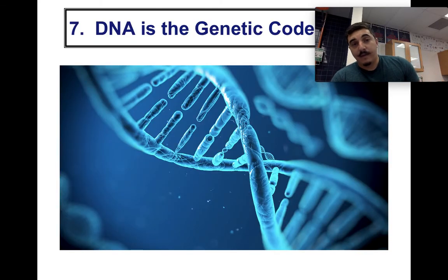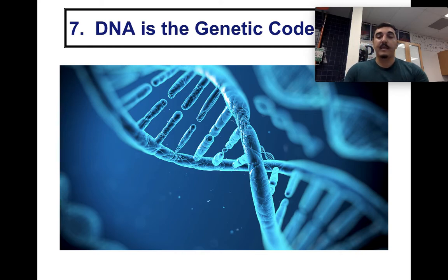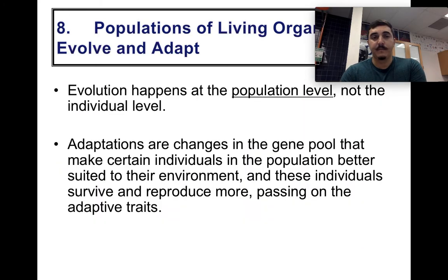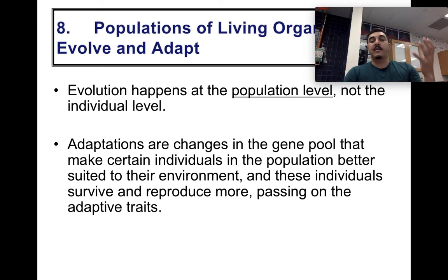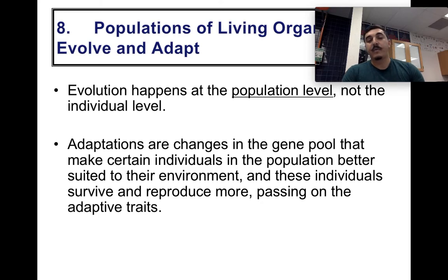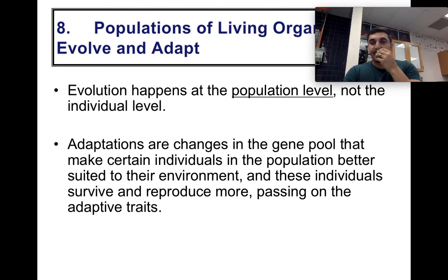Living organisms have DNA as their genetic code. DNA contains the instructions for making all proteins and cells. The final characteristic is that populations of living organisms must evolve and adapt. Evolution occurs at the population level — the gene pool changes, making some individuals better suited for their environment to survive and reproduce, passing on those adaptive traits.